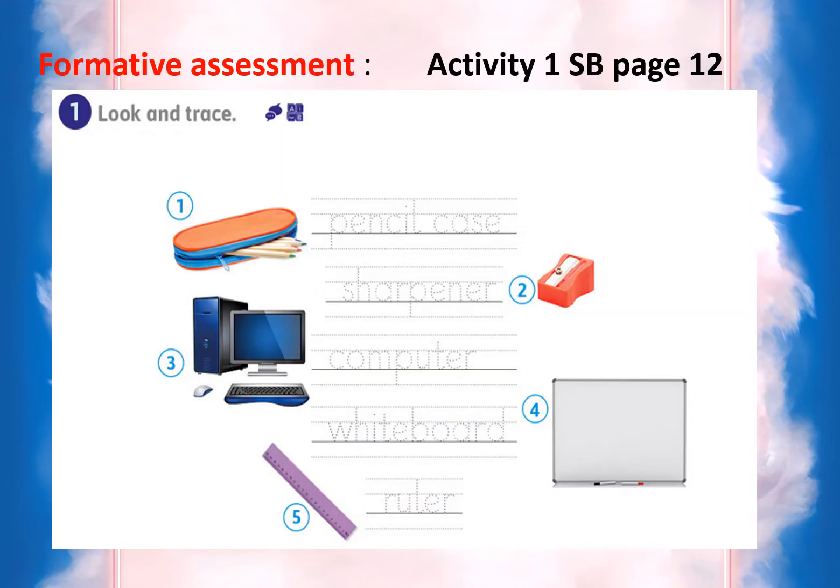Now we come to do this exercise in your student book. Activity number one, student book page — you can trace the words. Okay: pencil case, sharpener, computer, whiteboard.